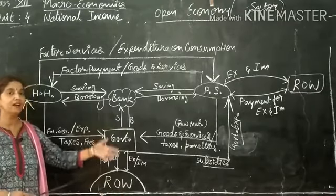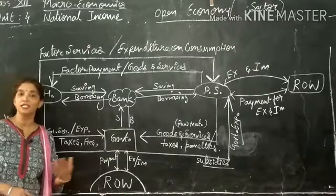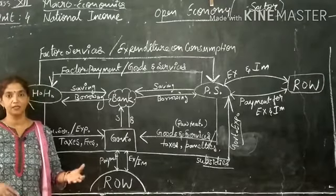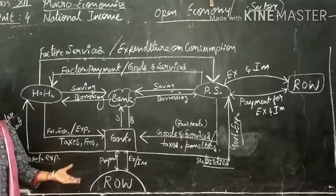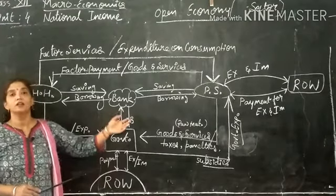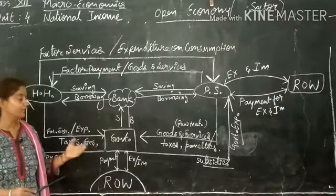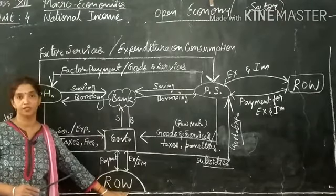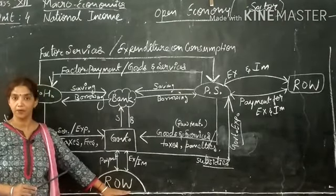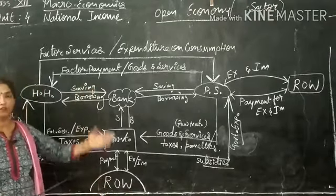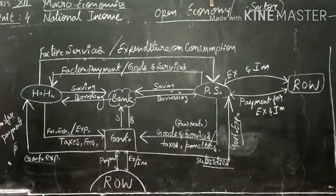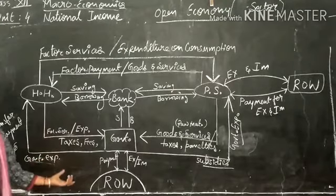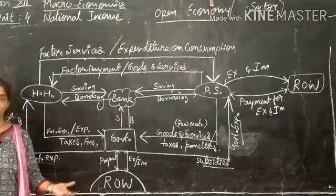Another example of transfer payment from rest of the world: during the crucial time of fighting COVID-19, if we receive funds from the World Bank, we are receiving transfer payment from the rest of the world. This is the concept of circular flow of income in open economy. If you have any doubts, you can ask.